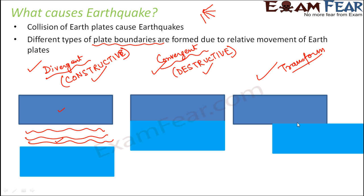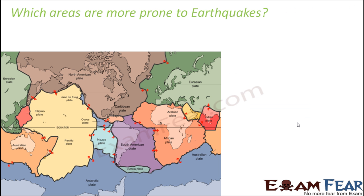So these are the three important types of plate boundaries formed due to movement of the plates with respect to each other. Now that you have understood what causes earthquakes, looking at the entire picture of the earth, which areas do you think are going to be more prone to earthquakes? Think about how earthquakes take place due to collision of the earth plates, and which areas that puts at risk.